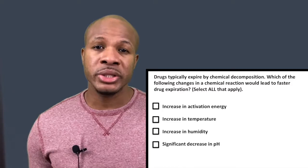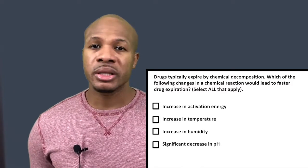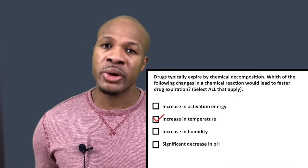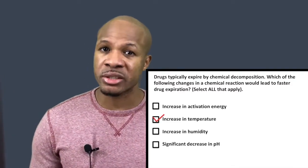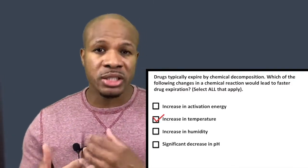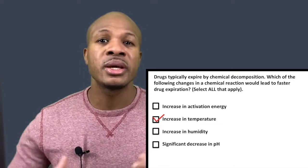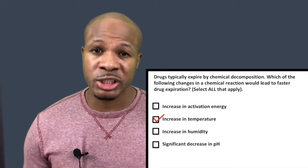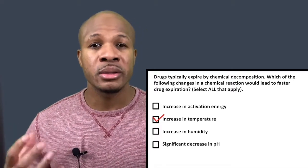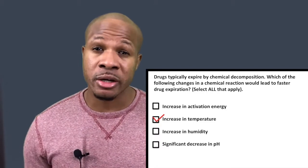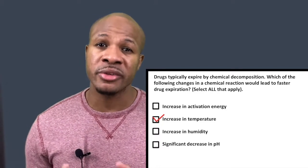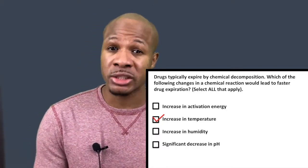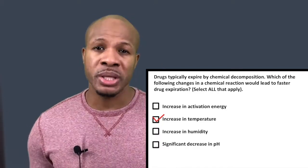B says: increase in temperature. Clearly, this is going to cause a chemical reaction to occur faster, because temperature increases molecular motion and causes more collisions to occur. And the more collisions that occur between molecules, the faster chemical reactions occur. So B will be correct.